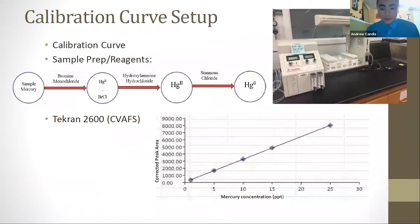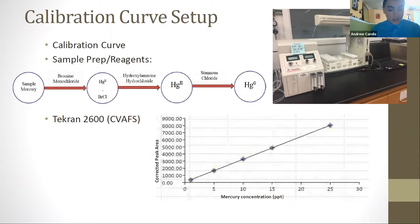During the cool down time, a calibration curve is made that will quantify the samples. Calibration standards were run under the TECAN 2600, which undergoes cold vapor atomic fluorescent spectroscopy. The TECAN produces readout peak areas that have a corresponding concentration, which allow creation of a calibration curve. After cool down, the samples are treated with certain reagents to convert all sample mercury into elemental mercury. They then enter the TECAN 2600 and produce peak values that determine the cat food mercury concentration.